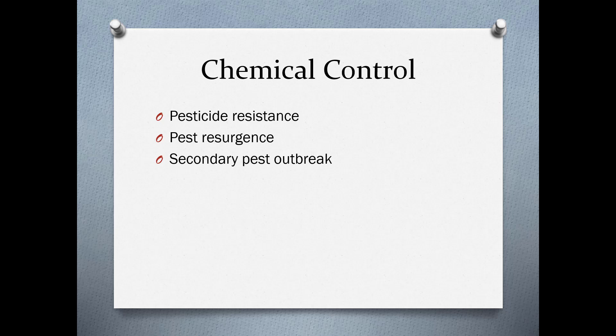A commonly used pesticide is imidacloprid, available under various brand names. It's a systemic insecticide—it gets into the plant and kills pests that feed on it. It's chemically related to nicotine and acts on certain receptors in the nerve synapse, being more toxic to invertebrates than to mammals. That's one reason it was introduced so heavily, but research is finding that it's really toxic to bees.